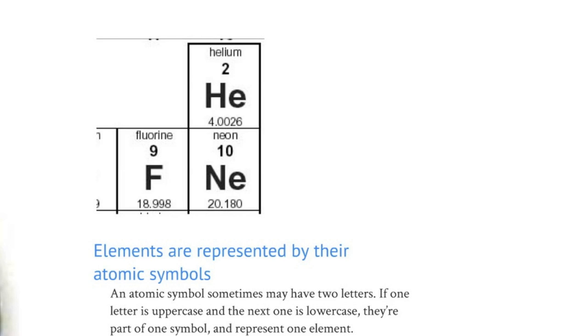An atomic symbol sometimes may have two letters. If one letter is uppercase and the next is lowercase, they are part of one symbol and represent one element. An example would be helium, capital H, lowercase e, so its atomic symbol is HE. Neon's symbol is NE, capital N, lowercase e. Fluorine just has a capital F, and that is the symbol for fluorine.